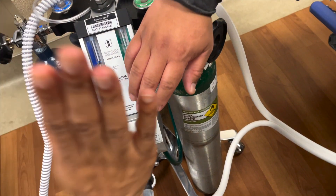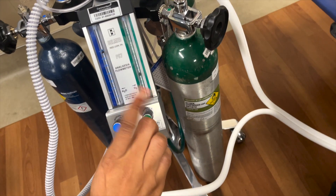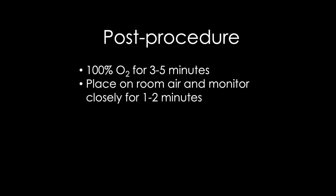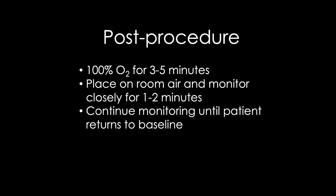It is important to note that only the physician can adjust the flow rate. After the procedure is done and nitrous is turned off, give 100% oxygen for three to five minutes. After this, remove the breathing circuit and breathe room air for about one to two minutes. You may discharge the patient once mentation and vital signs return to baseline. No additional monitoring is required.